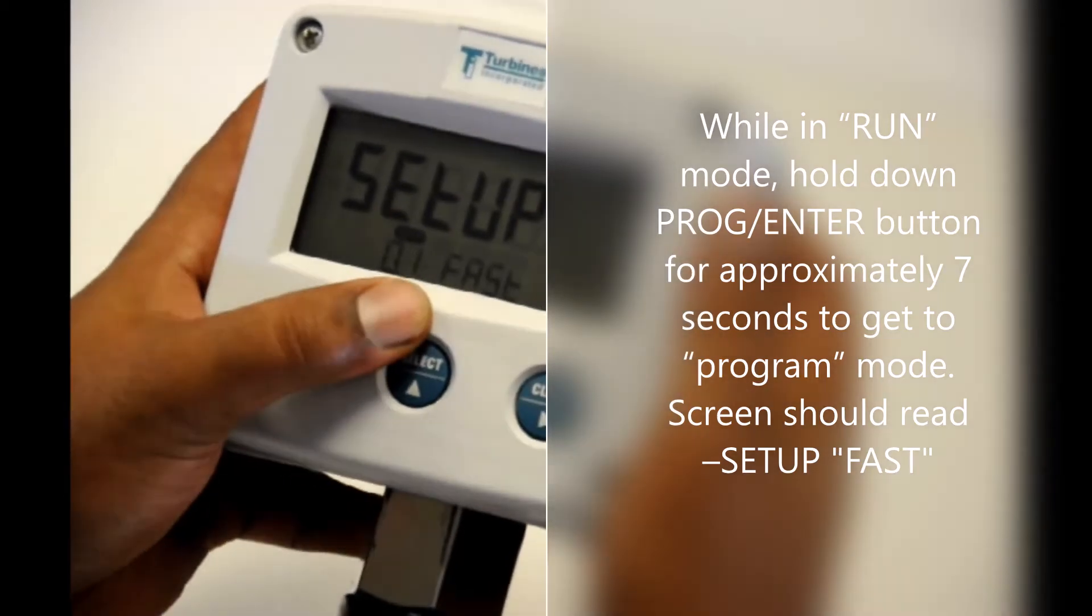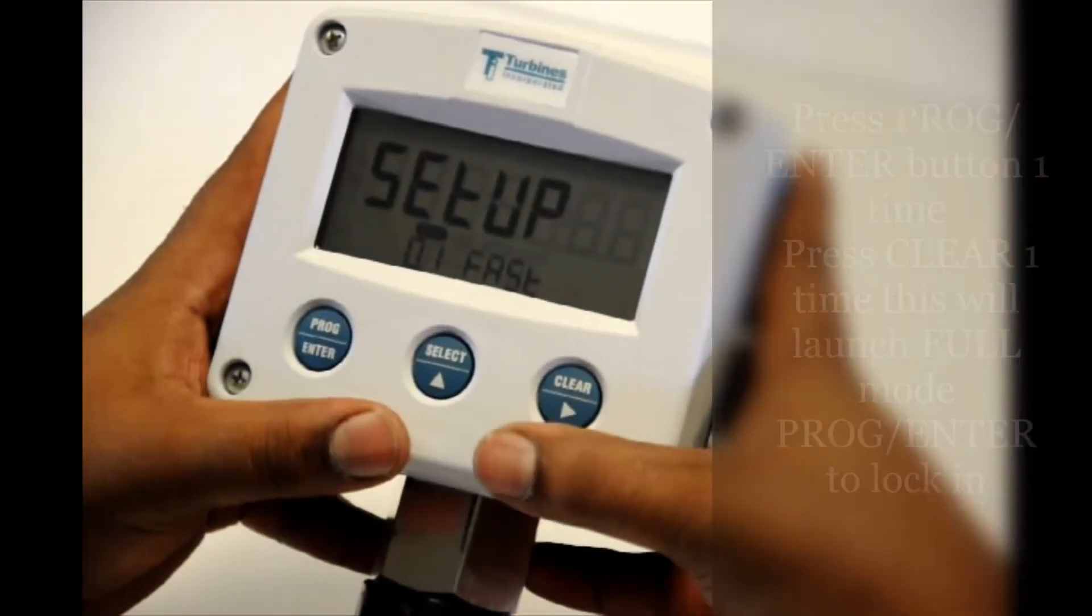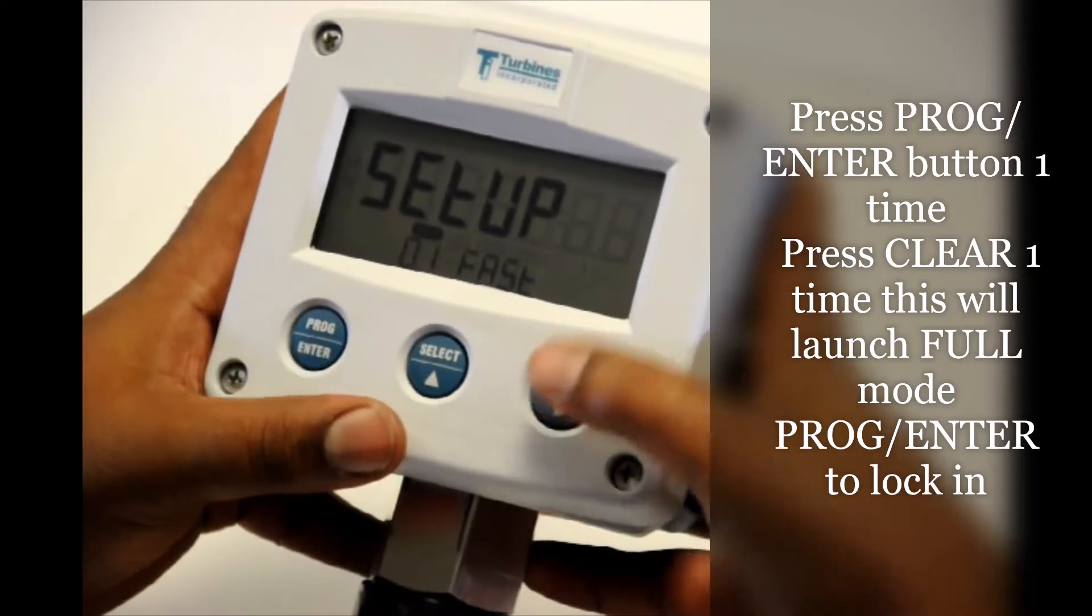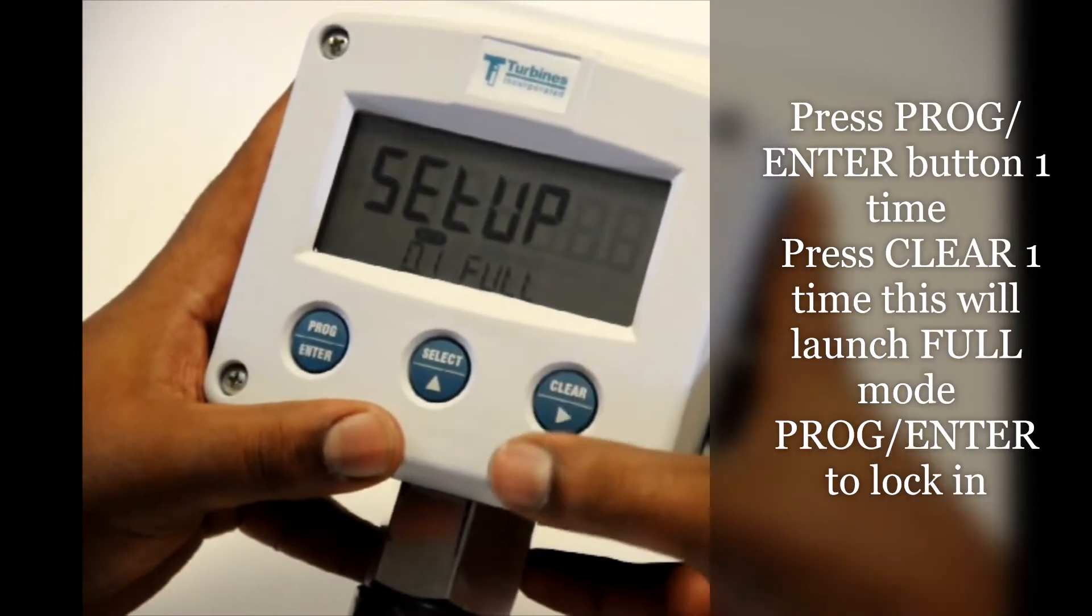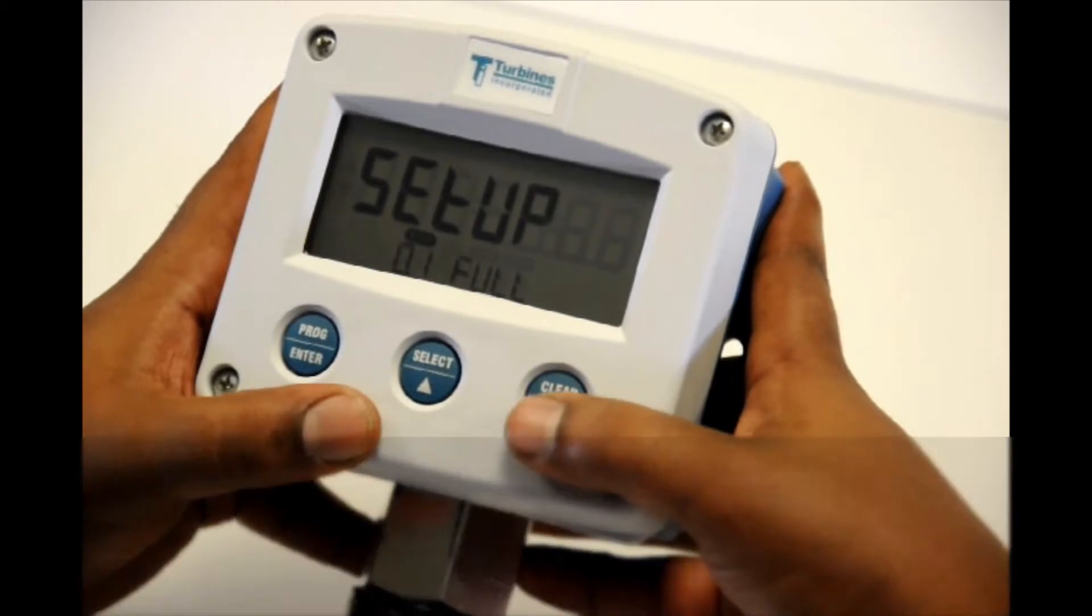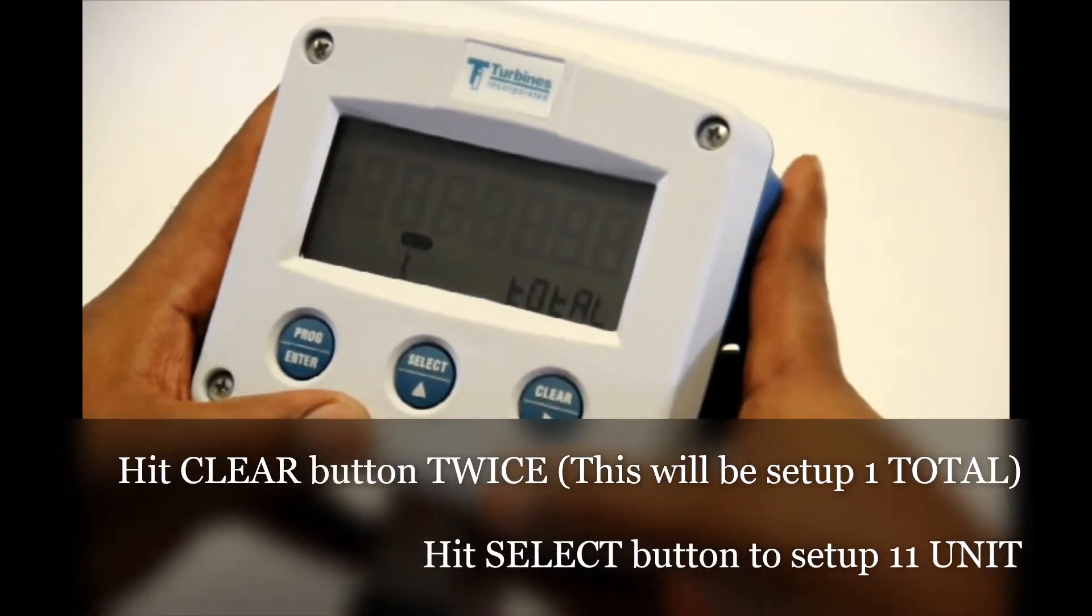Right now it's in our fast setup menu. Now we need to put this in full menu. So to do that hit program enter, hit clear. It's in full. Hit program enter again to lock it in. Clear twice. And now we're to our full menu.